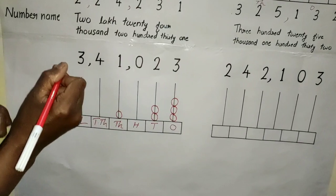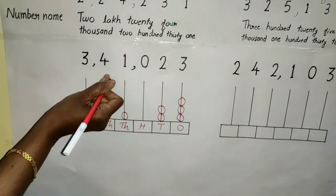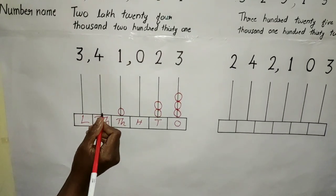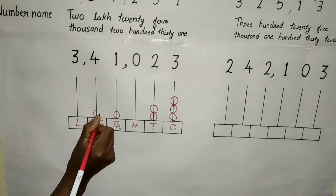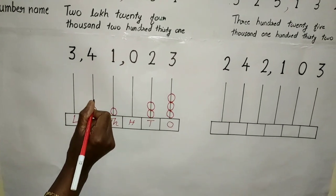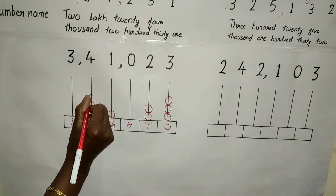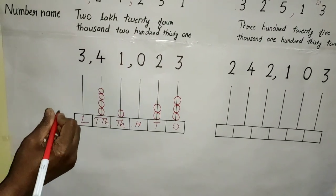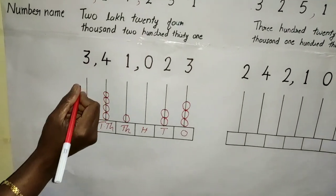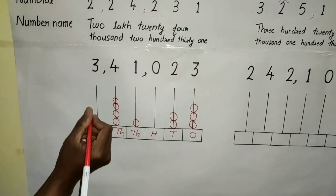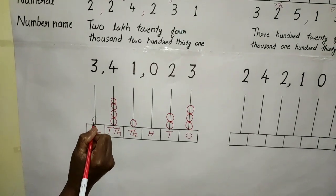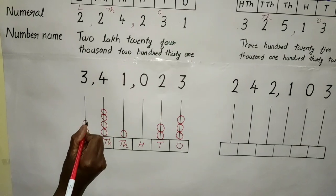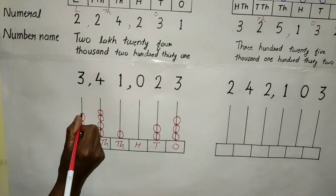Ten thousands place — the number in ten thousands place is four, so we have to draw four beads: one, two, three, four. Then the last place — the number representing the last place, that is three, so we have to draw three beads: one, two, three.